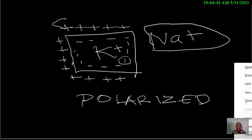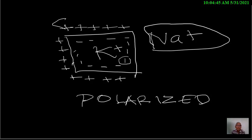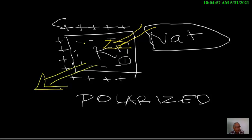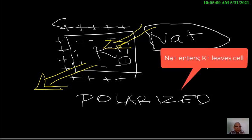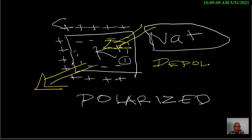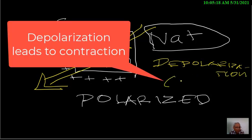When there is an exchange of these particular charges, there is going to be a difference in membrane potential. What happens is sodium will now enter into the cell and potassium is going to leave the cell. The process of sodium going into the cell and potassium leaving the cell is known as depolarization, which eventually causes contraction or the shortening of muscle fibers of the heart.